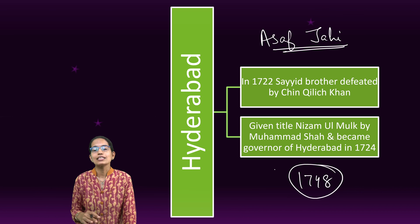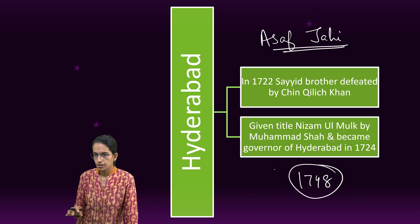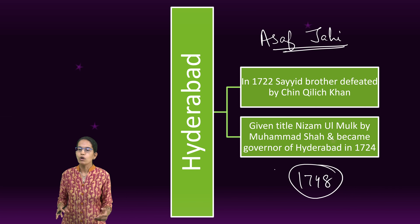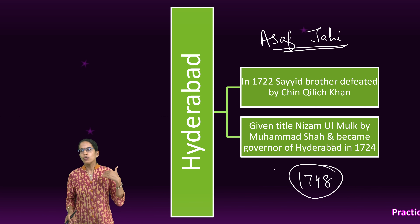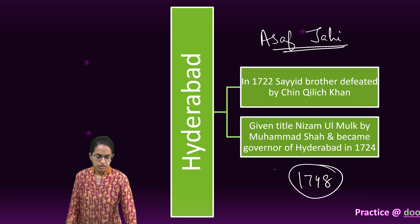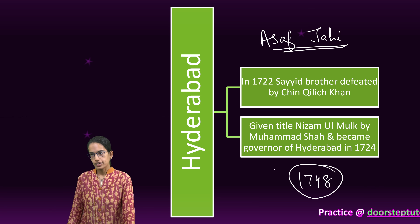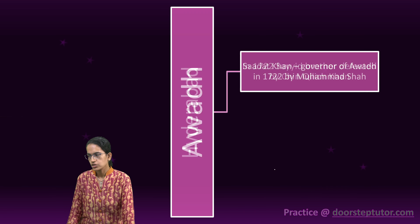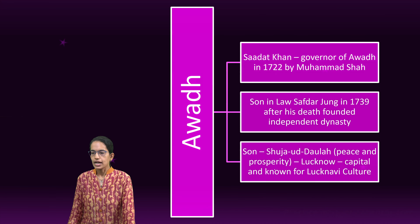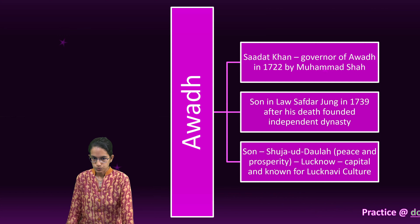After his death, his successors were extremely weak. However, the title of Nizam followed — the next generation followed the title of Nizam, which was the title given as the hereditary rulers.